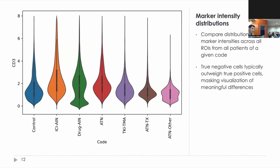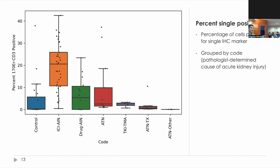Independent of cell classifications, we can visualize marker intensity distributions grouped by the cause of immune checkpoint inhibitor damage. Shown here is the mean CD3 intensity of all cells grouped by AKI code. Visually, it may not appear that there is much discernible difference, because the intensities of true negative cells typically outweigh those of true positive cells. Unless over half of your cells are immune cells — which would be very bad for the patient — you have to isolate your individual immune cells and visualize them accordingly. By applying our pathology-supervised thresholds, we can identify the positive population and find the percentage of cells positive for individual markers, as shown here for CD3.